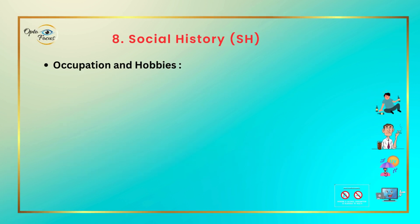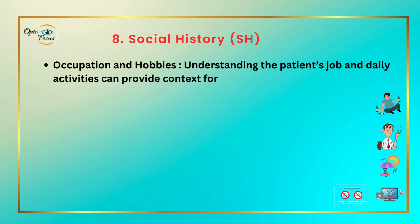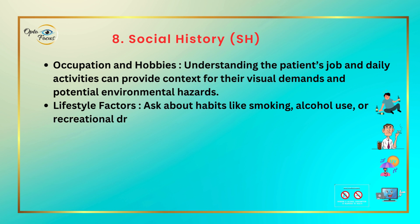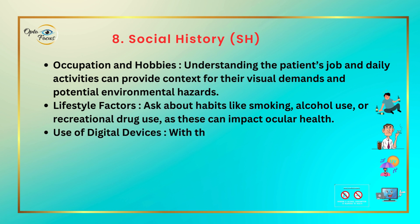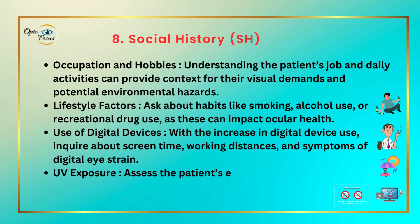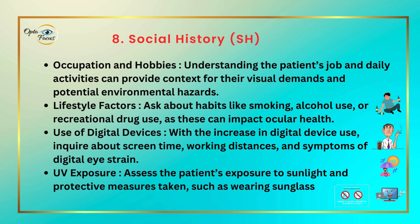Social history — occupation and hobbies. Understanding the patient's job and daily activities provides context for their visual demands and potential environmental hazards. Record lifestyle factors: ask about habits like smoking, alcohol use, or recreational drug use, as these can impact ocular health. Record use of digital devices — enquire about screen time, working distance, and symptoms of digital eye strain. Also record UV exposure and assess the patient's use of protective measures such as wearing sunglasses.